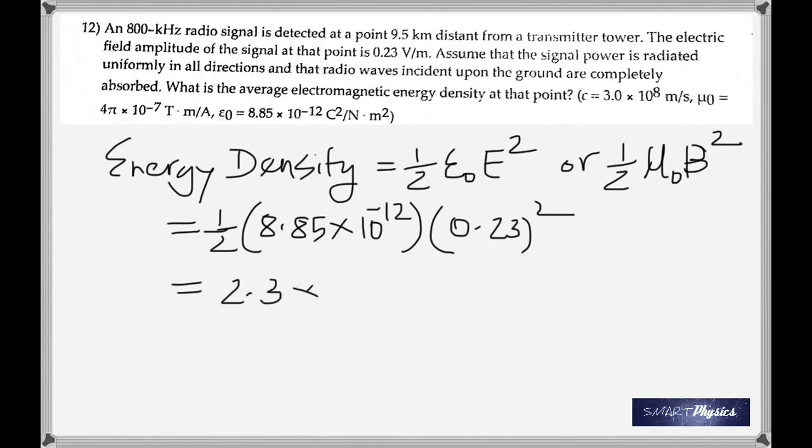When you calculate this, it comes out to be 2.3 times 10 to the negative 13 joule per meter cube, and that is the answer. Thank you.